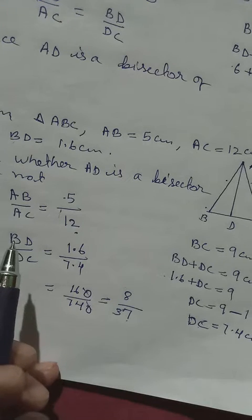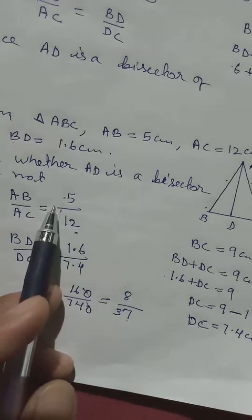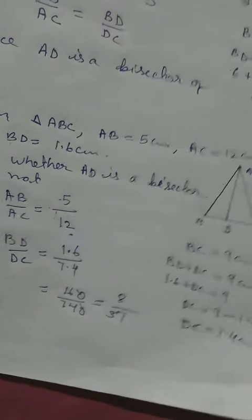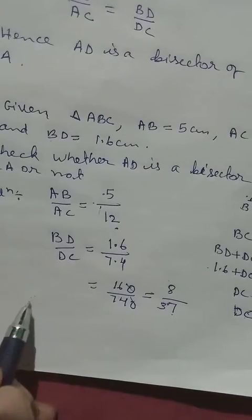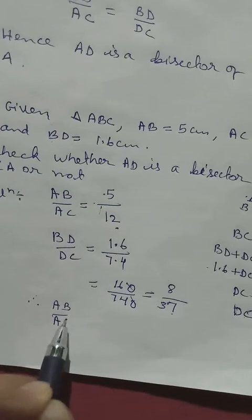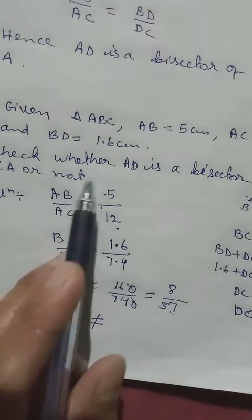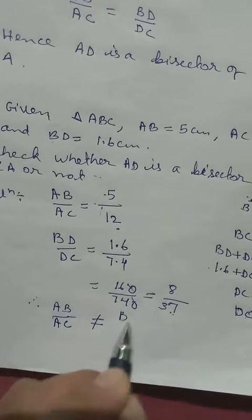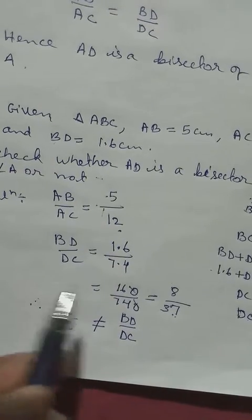Which means that the ratios are not equal. So if the ratios are not equal, we can say that AD is not a bisector of angle A, because AB by AC is not equal to BD by DC. We see here we get 8 by 37, there we get 5 by 12. So when the ratios are not equal, we can say that AD is not a bisector. So similarly, you can try yourself question number 4.